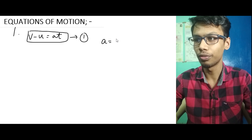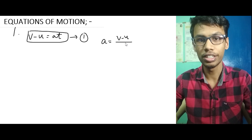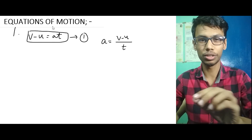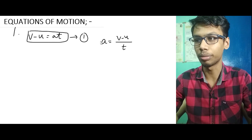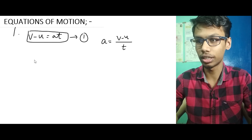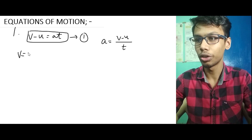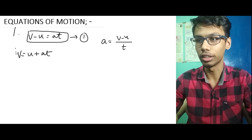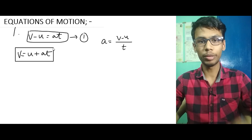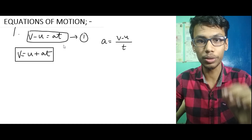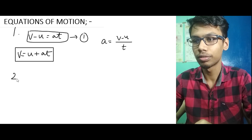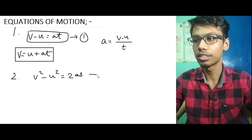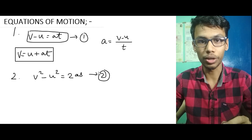We already know that acceleration is equal to change in velocity divided by time. So rearranging, we get v minus u equal to a into t. The second equation is v squared minus u squared equal to 2as.